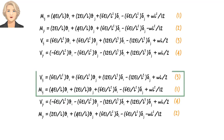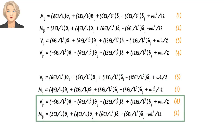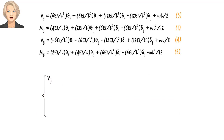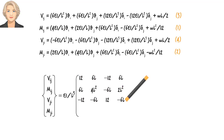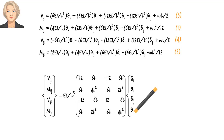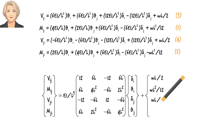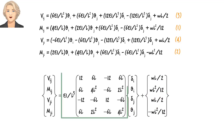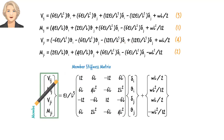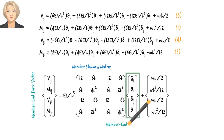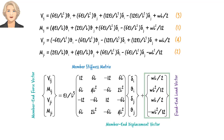The first two equations give us shear and moment at joint i, and the second pair of equations is for shear and moment at joint j. In matrix notation, these equations can be written as: the member stiffness matrix, the member end force vector, the member end displacement vector, and the fixed end load vector.